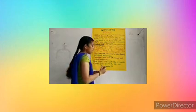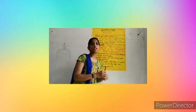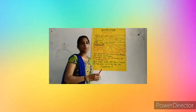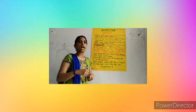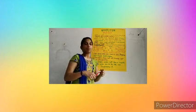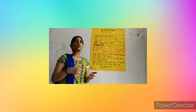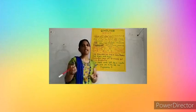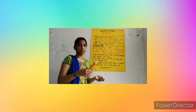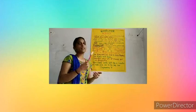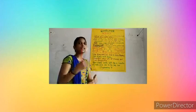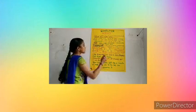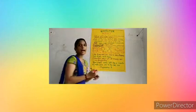Seventh is dynamic binding. Dynamic binding is also one part of OOPS — object oriented programming language. Dynamic binding means linking — linking one object to another object. An object has state, behaviour, and identity. We are binding, means linking, one object to another object. That is known as dynamic binding.